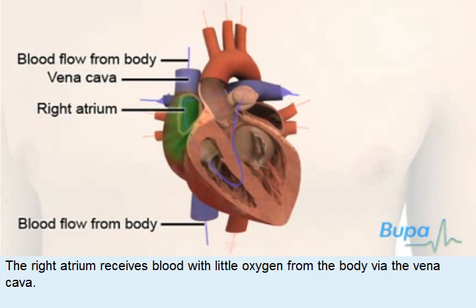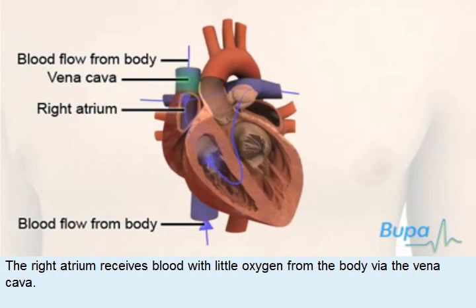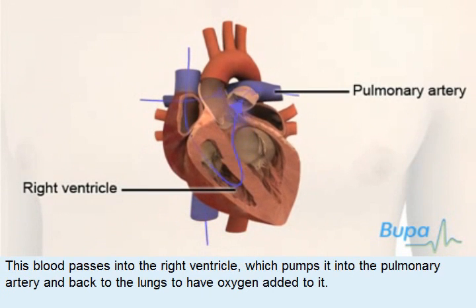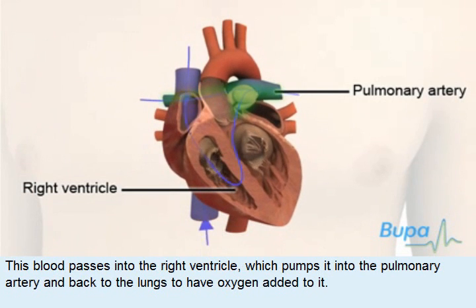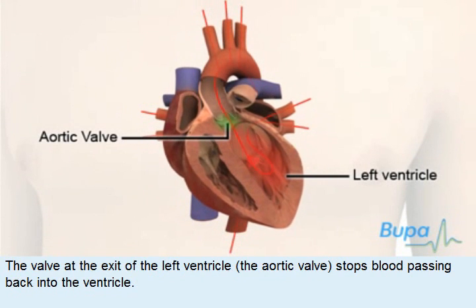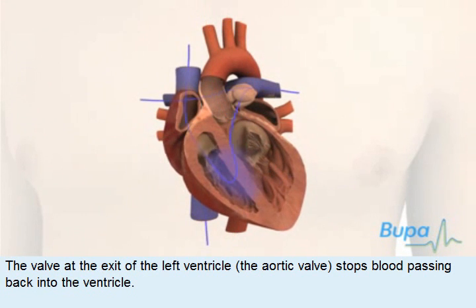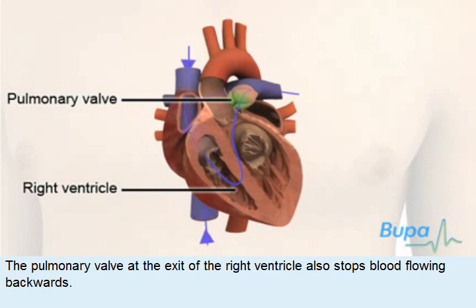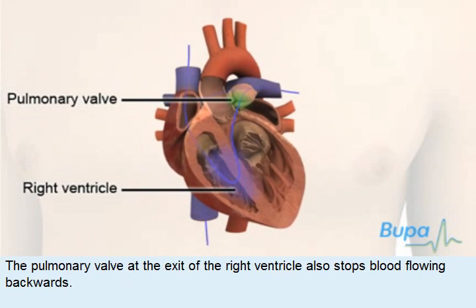The right atrium receives blood with little oxygen from the body via the vena cava. This blood passes into the right ventricle, which pumps it into the pulmonary artery and back to the lungs to have oxygen added to it. The aortic valve at the exit of the left ventricle stops blood passing back into the ventricle. The pulmonary valve at the exit of the right ventricle also stops blood flowing backwards.